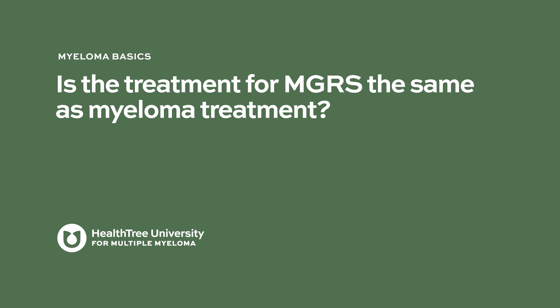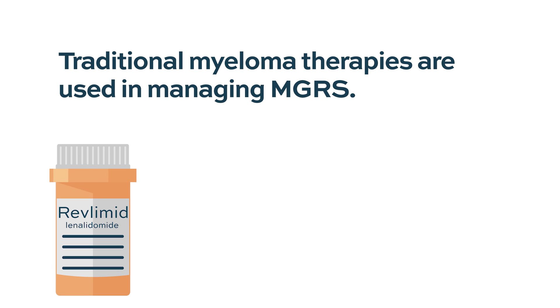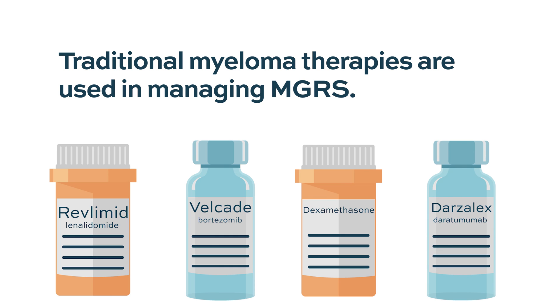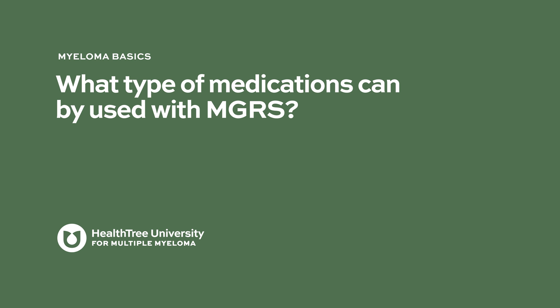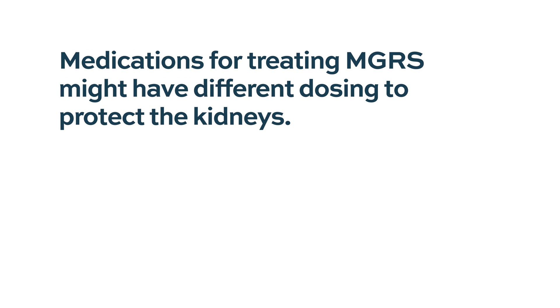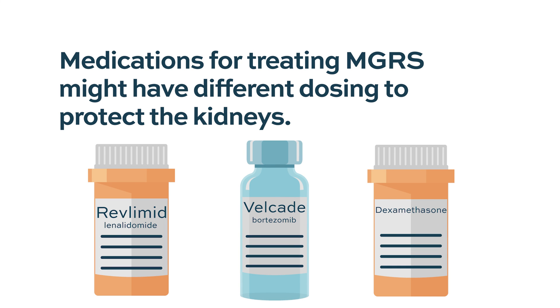Is the treatment for monoclonal gammopathy of renal significance the same as myeloma treatment? In terms of treatment for MGRS, we are typically talking about myeloma-based therapies that we would use to treat somebody with traditionally symptomatic multiple myeloma. When people have a kidney problem like MGRS, we have to pay special attention to the medications we use — they sometimes have to be dosed differently. Medications like lenalidomide, bortezomib, and dexamethasone can still be used; we just have to pick the right doses for the kidney function.